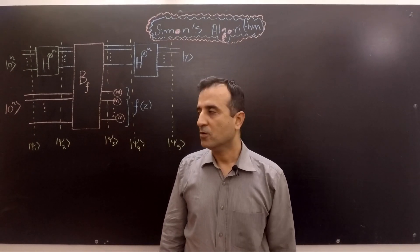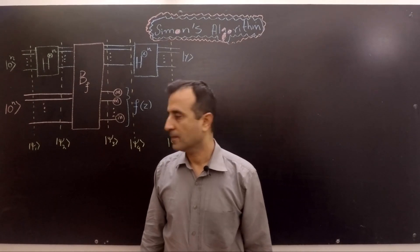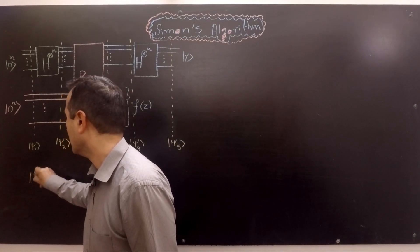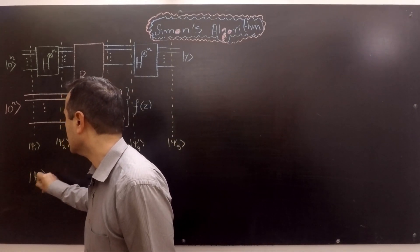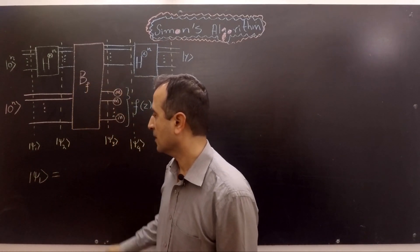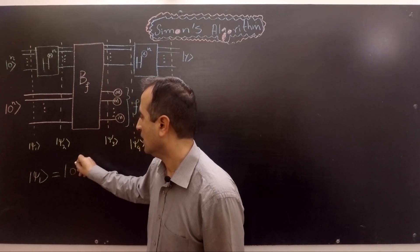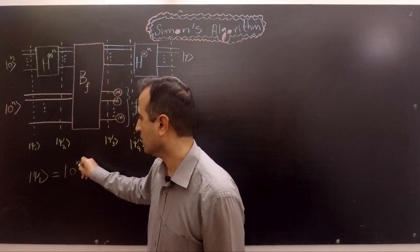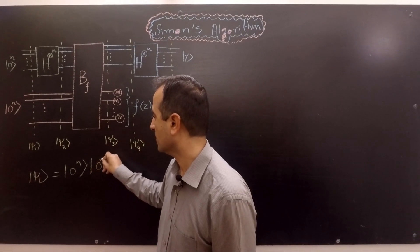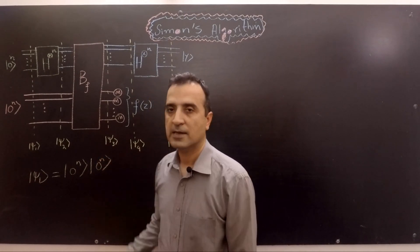The output of the first stage will be |ψ1⟩, and |ψ1⟩ will consist of two n-bit registers. The first register will be equal to |0⟩ and the second register will also be equal to |0⟩. So both registers are initialized with |0⟩.